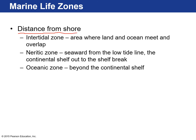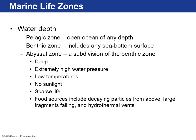In terms of distance from shore: the intertidal zone is where land and ocean meet, with tides moving up and down — sometimes inundated, sometimes exposed. The neritic zone is seaward from the low tide line out to the continental shelf break. The oceanic zone is beyond the continental shelf. The pelagic zone is open ocean at any depth. The benthic zone is any sea bottom surface. The abyssal zone — typically at subduction zones — is a subdivision of the benthic zone with extremely high water pressure, low temperature, no sunlight, and very little life.